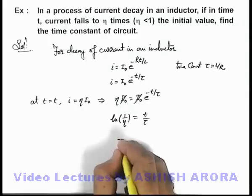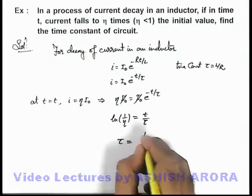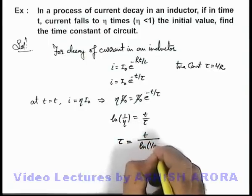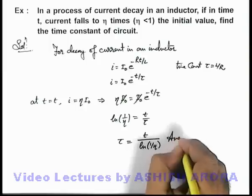So in this situation, the time constant of circuit we can write as t divided by ln of 1 by η. That will be the answer to this problem.